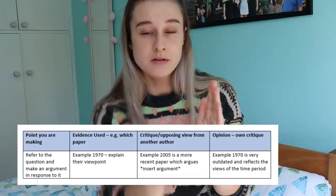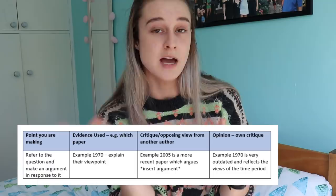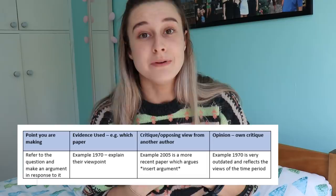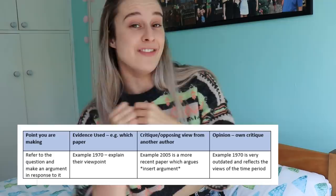Doing a table might seem horrible — I used to hate the idea — but if you make a table with your point in one column, what paper backs this up in another column, critique of that paper or someone who agrees with it in another, and then perhaps your opinion in the final column — something like 'what this suggests is' or 'I would argue that' — it can be really effective. A critique might be you saying this source is actually outdated and a newer source has a different idea.